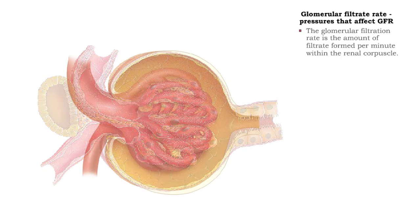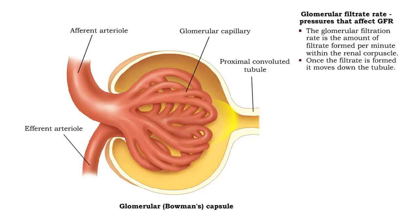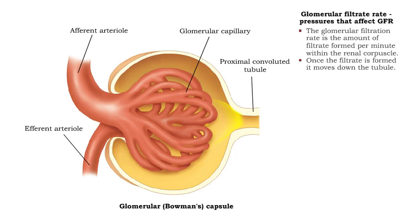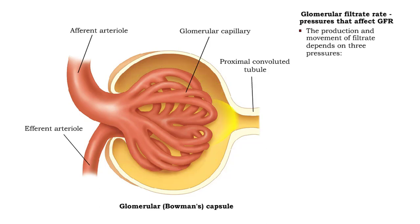The rate that filtrate is formed within the renal corpuscle is known as the glomerular filtration rate. Once the filtrate is formed, it moves down the tubule. The production and movement of filtrate depends on three pressures.